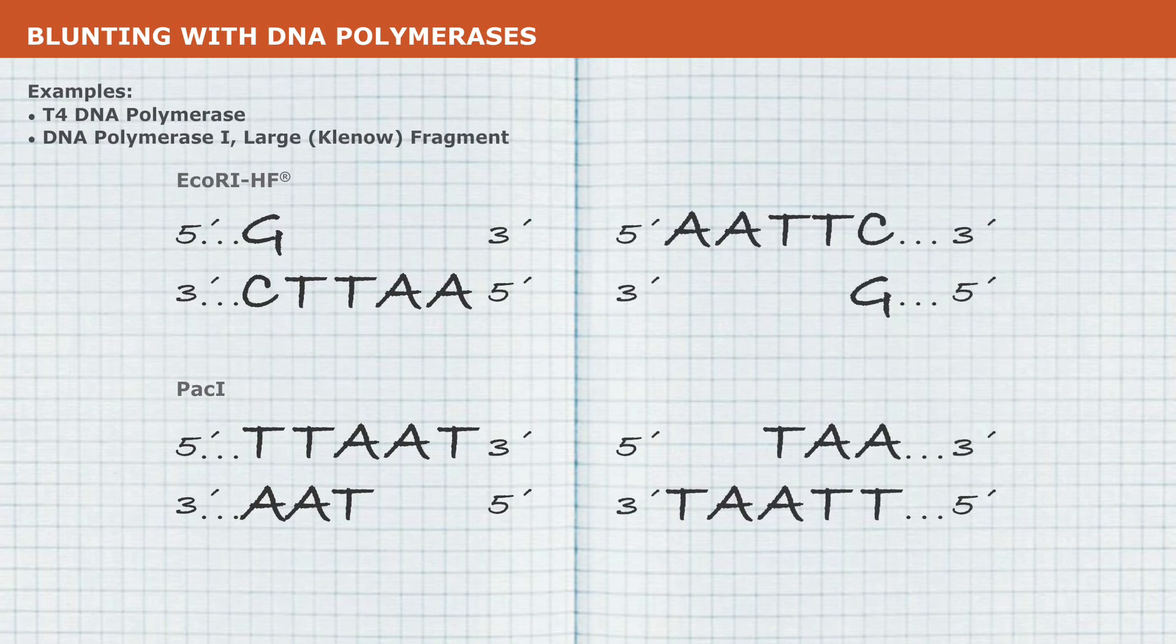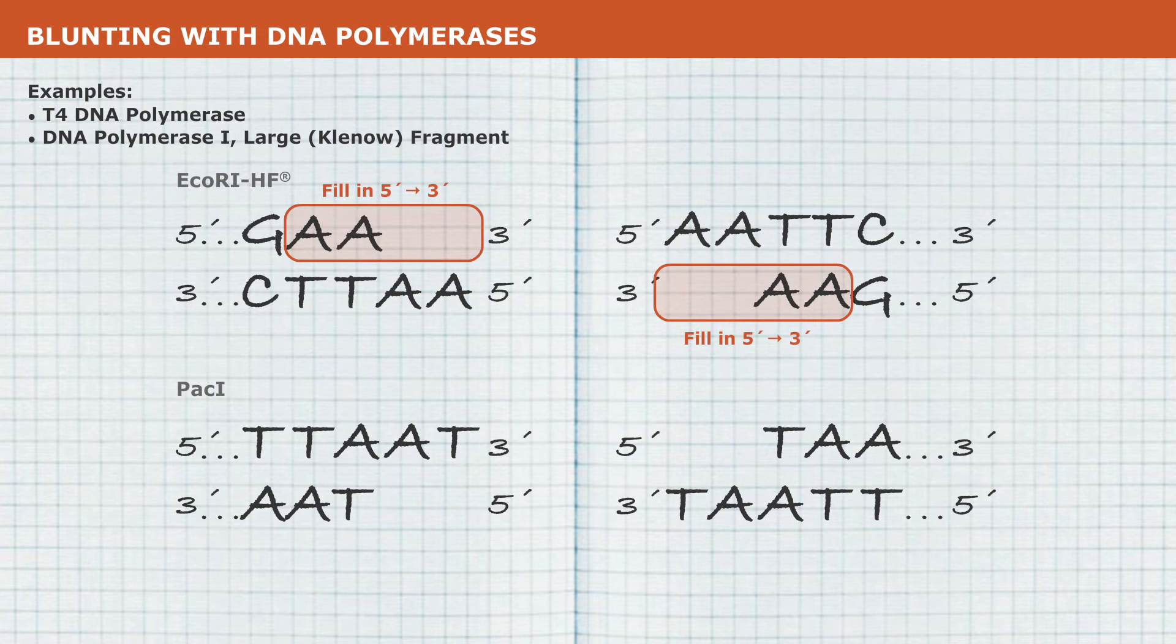Polymerases, such as T4 DNA polymerase and DNA polymerase 1 large Klenow fragment, can blunt an end by either using a polymerase activity to fill in a 5' overhang in the 5' to 3' direction.